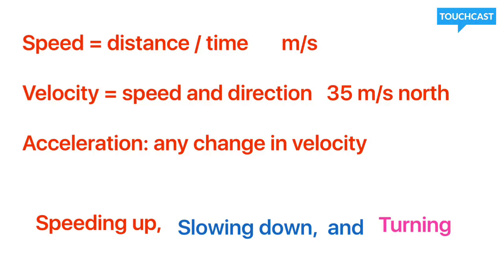Velocity is going to be speed and direction. So like 35 meters per second north — since you have a direction, that makes it a velocity. That is the only difference between speed and velocity: velocity has direction.